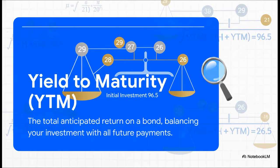To figure that out, we need this special tool called Yield to Maturity, or YTM for short. Think of it as the single number that gives you the true apples-to-apples return you're getting. It's basically the one magic interest rate that makes all those future payments—the 29, 28, 27, and 26—perfectly balance out with the 96.5 you invested today. It's the bond's hidden truth.